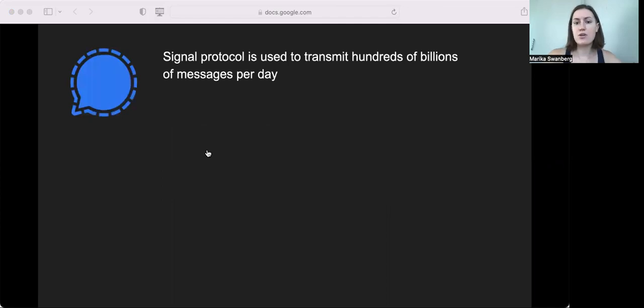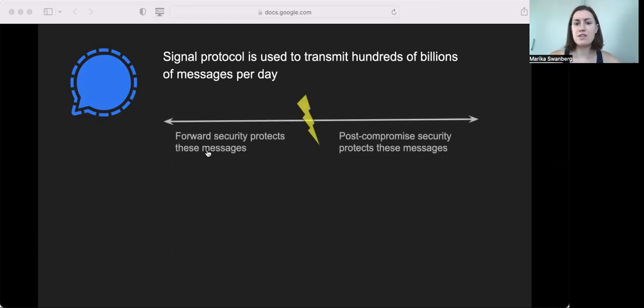So Signal is a secure messaging protocol used to transmit hundreds of billions of messages each day, and one of its key innovations is it has a continuous key agreement with both post-compromise and forward security. Recall that forward security protects the data transmitted before a compromise, and post-compromise security protects data transmitted after the exposure event.